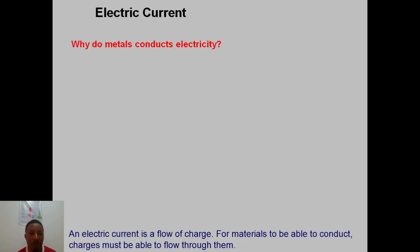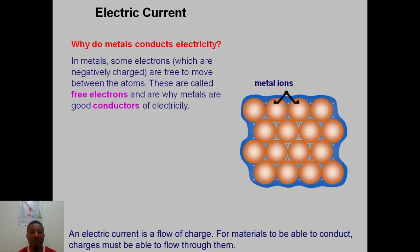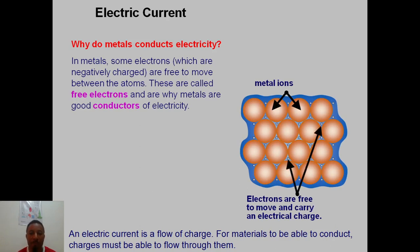Why do metals conduct electricity? Metals actually conduct electricity because they have free moving electrons in them. Can you see the electrons, the metal ions? These electrons are mobile — they are free to move from one point to another. When they move, they carry energy with them.